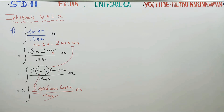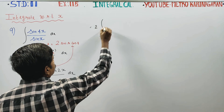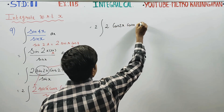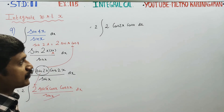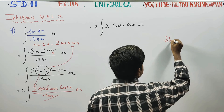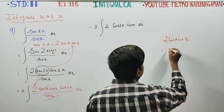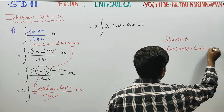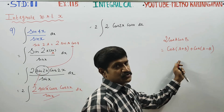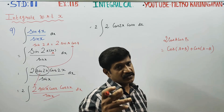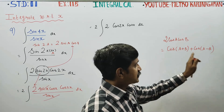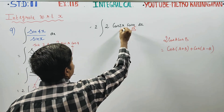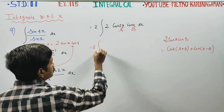Sin X cancels with sin X in the denominator. We are left with 2 times 2 cos X cos 2X dx. Now applying the product-to-sum formula: cos A cos B equals one half of cos(A+B) plus cos(A−B). Here A is 2X and B is X.